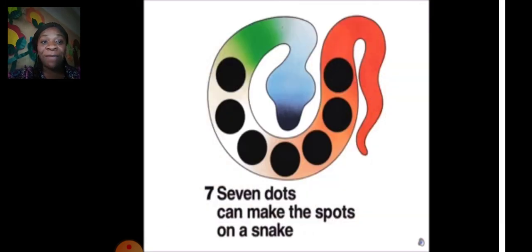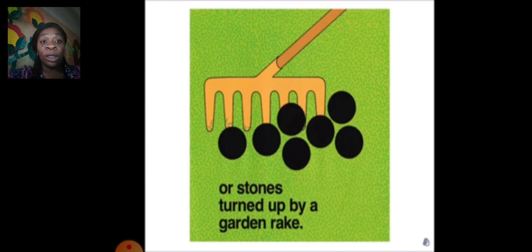Seven dots can make the spots on a snake, or stones turned up by a garden rake.